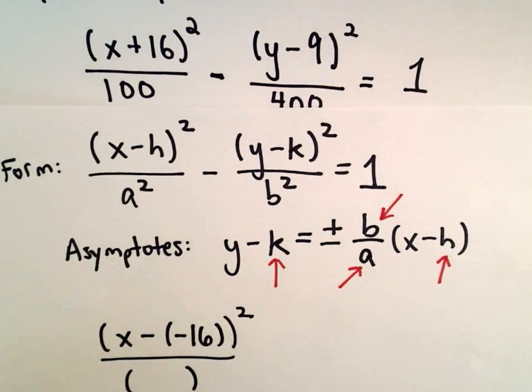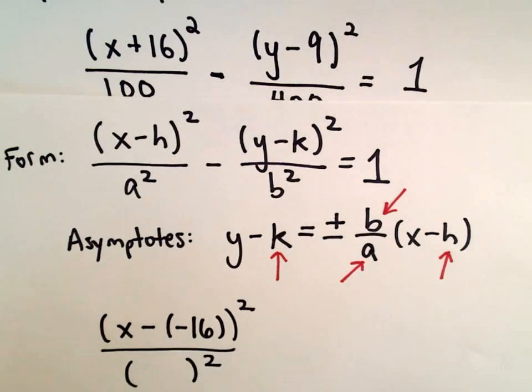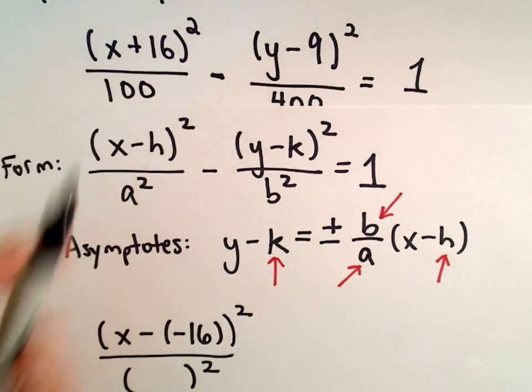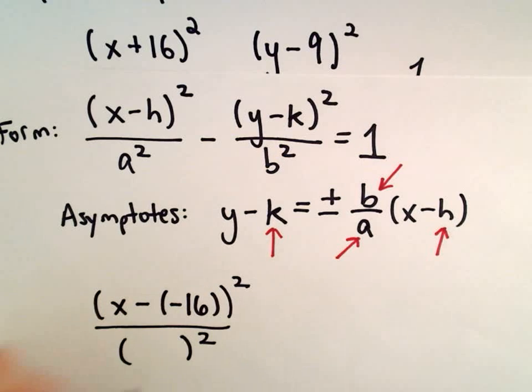I want to write the denominator as some number squared. I want that number to equal 100. What number squared is going to be 100? We always let our a and b values be positive, so we're going to use positive 10 squared.